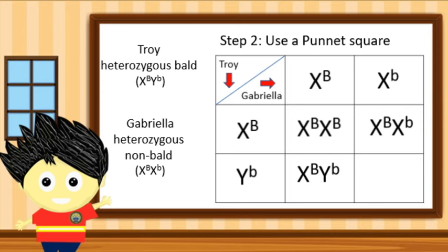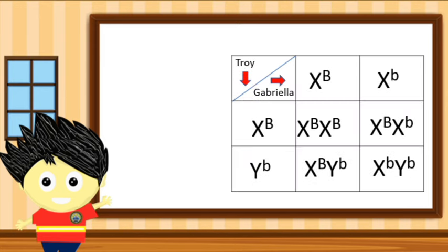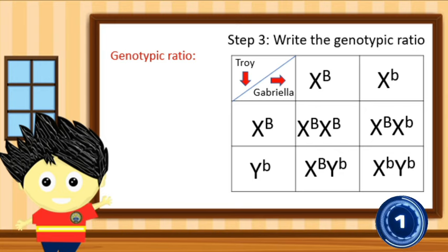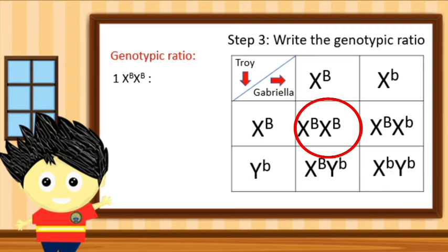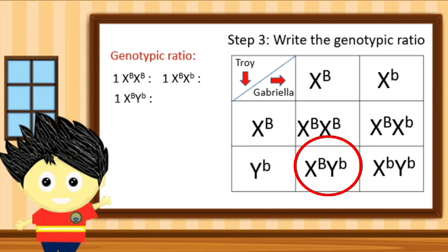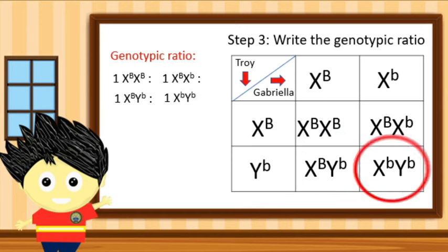For the fourth and last box: we get X and Y chromosomes with a superscript of identical small letter b, referring to a male non-bald trait carrier. After using the Punnett Square, we now write the genotypic ratio. The genotypic ratio is: 1 female homozygous bald : 1 female non-bald : 1 male heterozygous bald : 1 male non-bald.